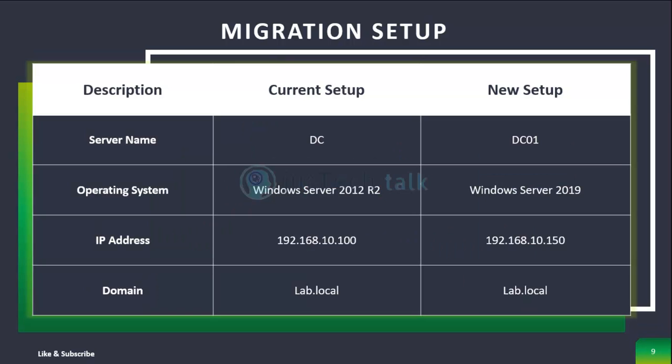In the current setup, the server name is DC, running Server 2012 R2 with IP 192.168.10.100. The new setup has server name DC01, running Server 2019, with IP 192.168.10.150. Both are joined to lab.local. Let's get started with the migration process.